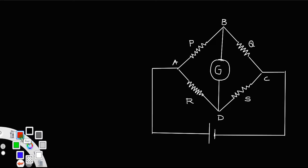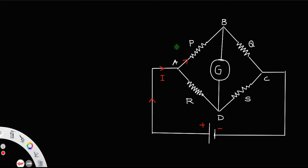There are certain things you have to notice here. Current always moves from the positive terminal of the cell to the negative terminal, so the current starts from here and the direction of current will be like this. Let I be the magnitude of the current. Point A is a junction, so a current I1 will flow through resistor P. The rest of the current, I minus I1, will move through resistor R.